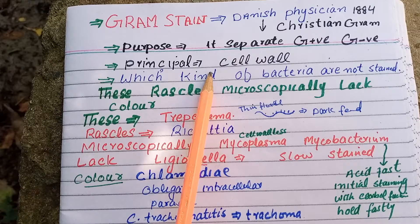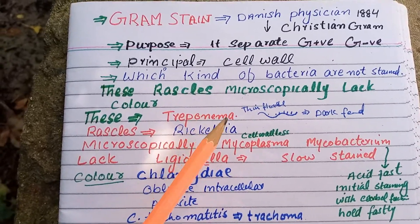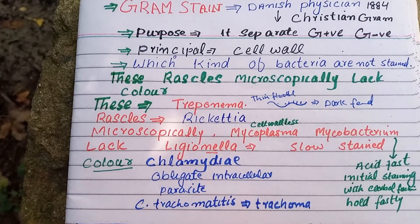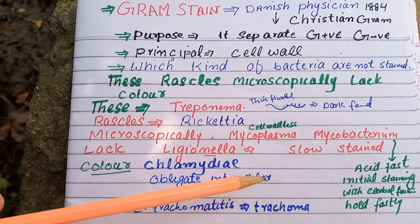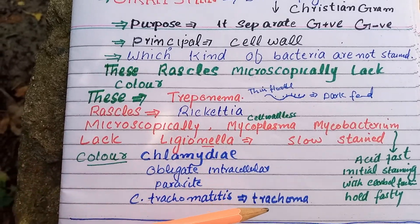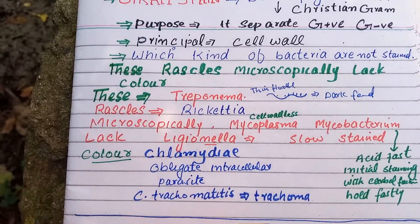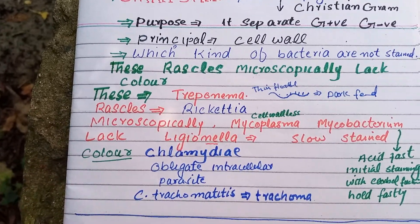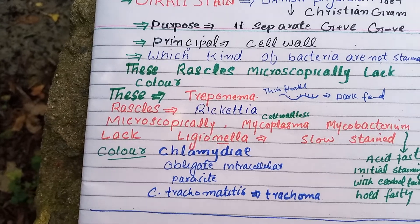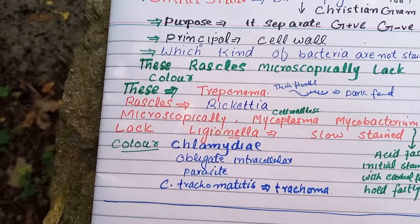You should remember, in a question, it is very important to know which type of bacteria are not Gram stained. You should remember the formula: 'These Rays Kill Microscopically, Leg Color' — representing Treponema, Rickettsia, Mycobacterium, Mycoplasma, Legionella, and Chlamydia.